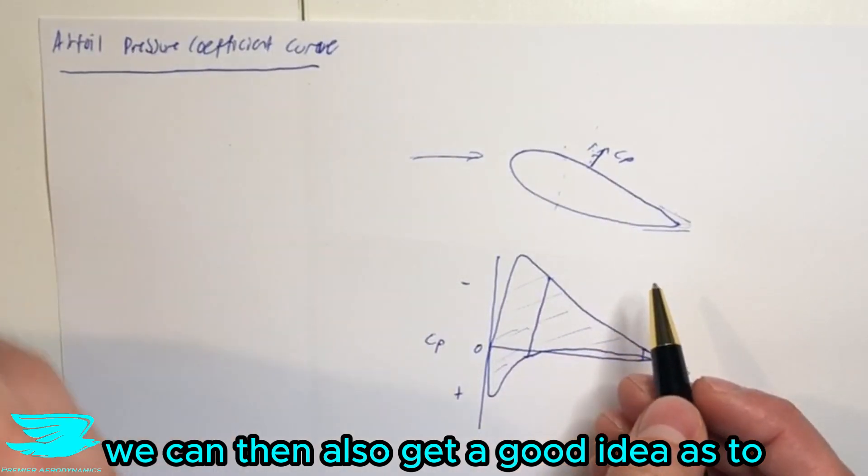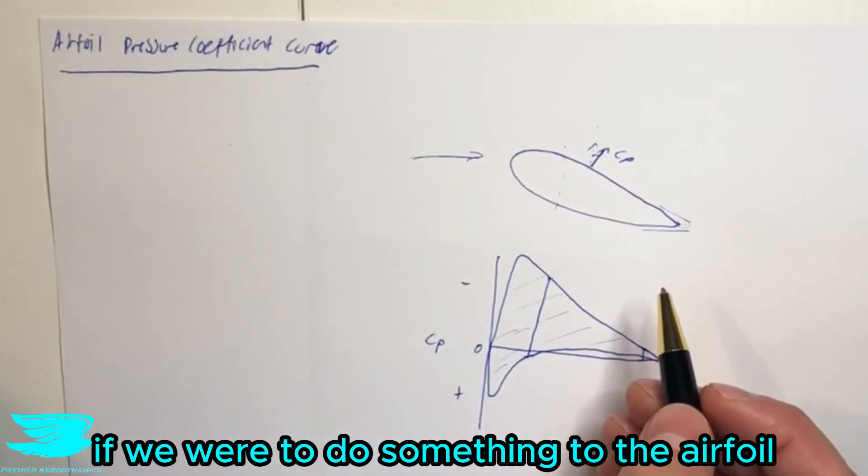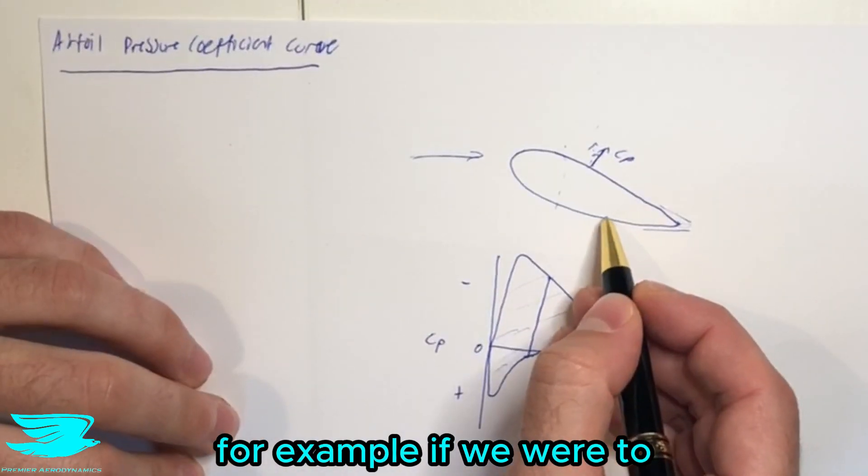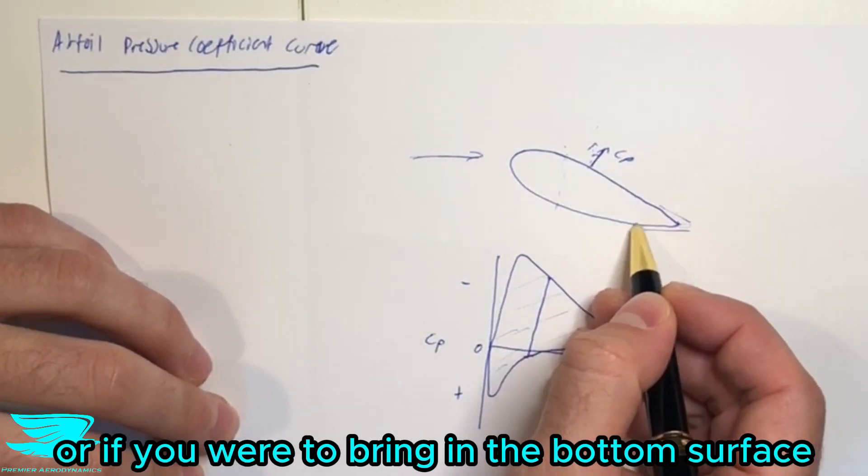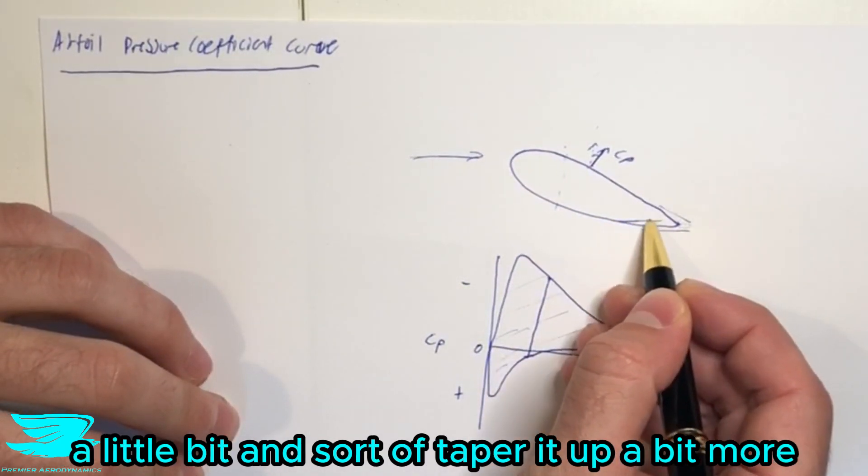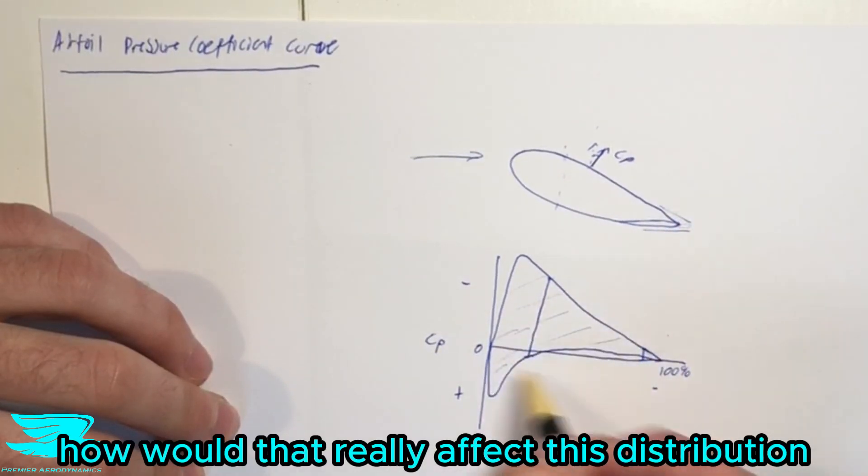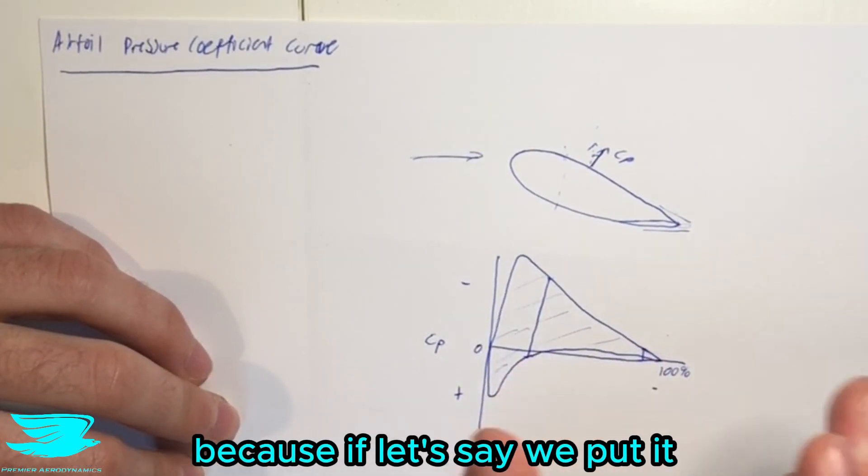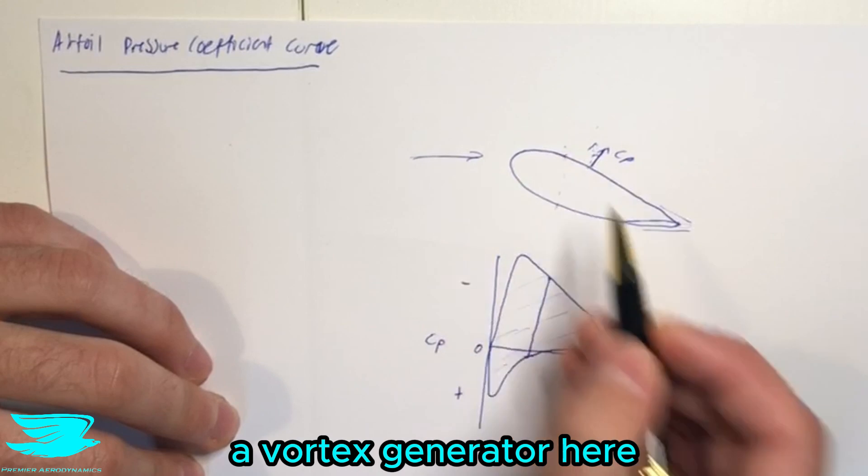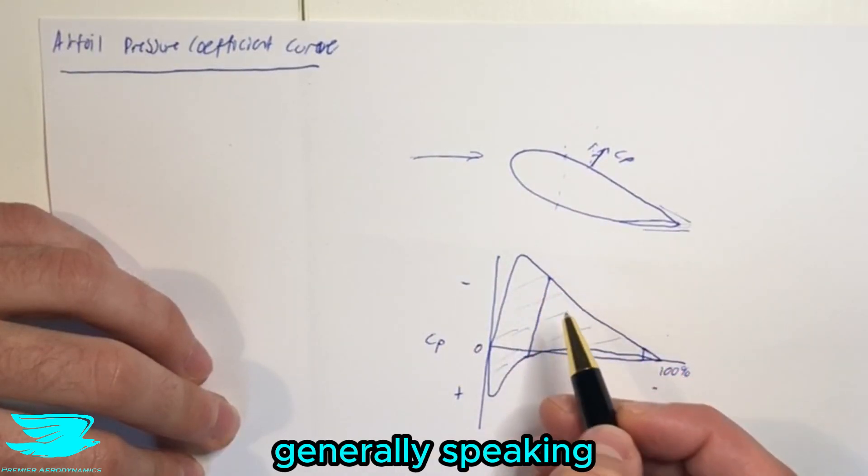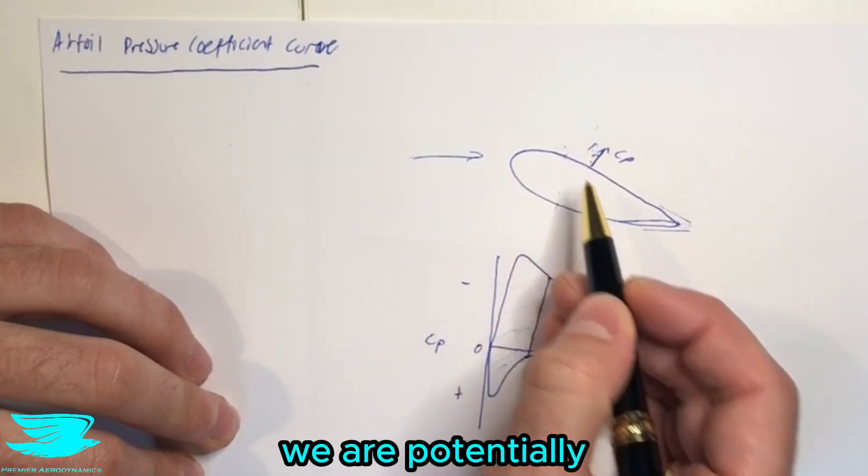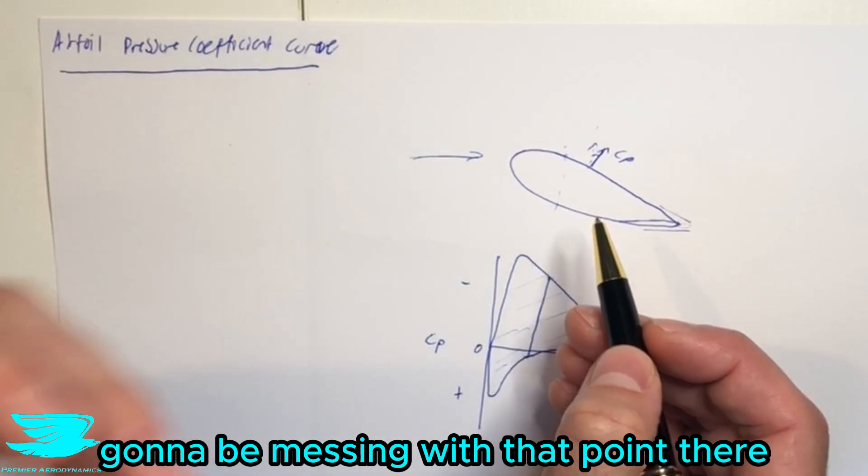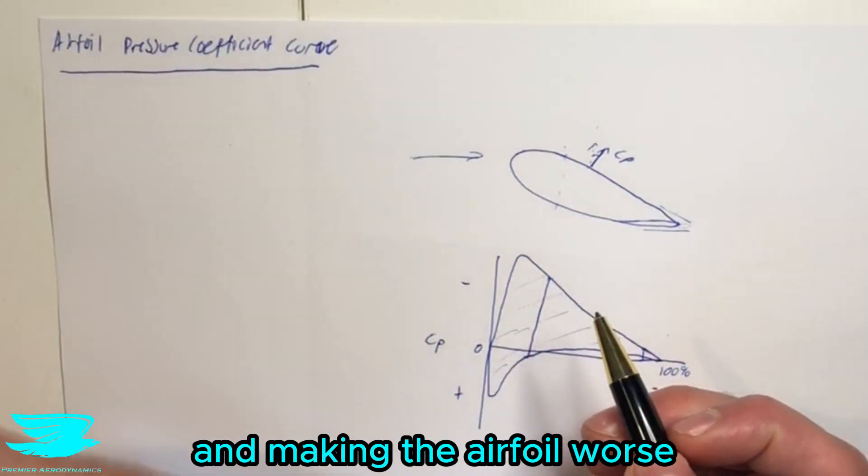We can then also get a good idea as to, if we were to do something to the airfoil, for example, if we were to put a vortex generator here, or if we were to bring in the bottom surface a little bit and sort of taper it up a bit more, how would that really affect this distribution? Because if, let's say, we put a vortex generator here, where we're getting a lot of lift being produced, generally speaking, we're potentially going to be messing with that point there and making the airfoil worse in terms of lift production.